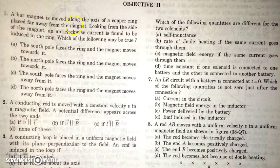There's a bar magnet which is moved along the axis of a copper ring placed far away from the magnet. Looking from the side of the magnet, an anti-clockwise current is found to be induced in the ring. We have to determine which of the following cases may be true.